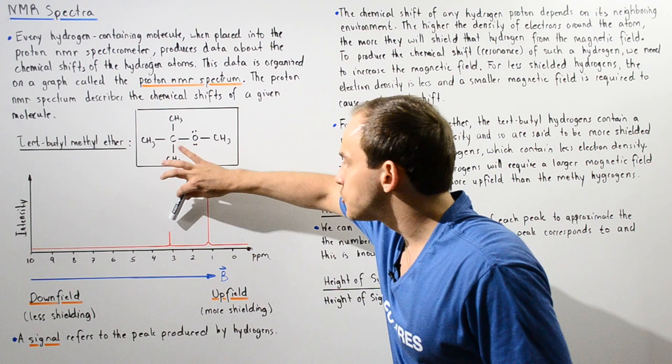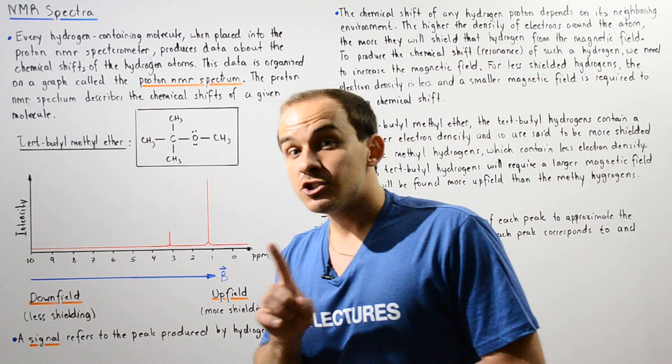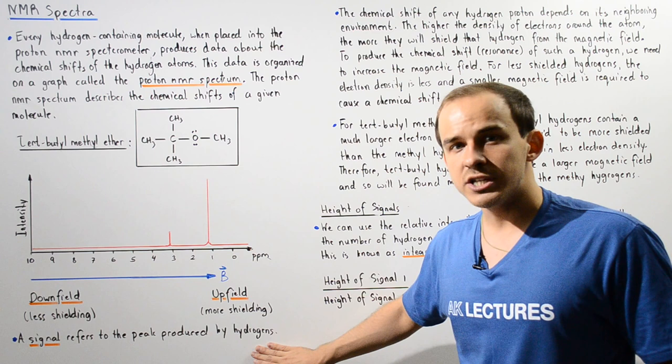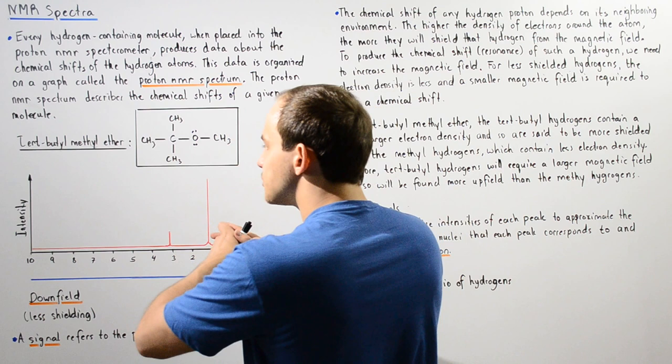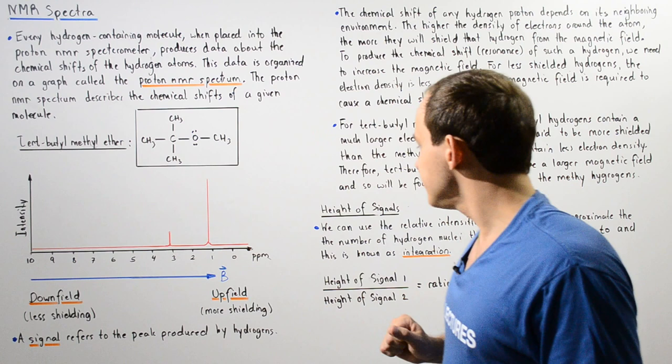Each one of these peaks is known as a signal. A signal refers to the peak produced by our protons inside those hydrogen atoms. The y-axis designates the intensity of those signals — the height of those signals. The greater the height is, the more intense our signal is. We'll see what the intensity tells us in just a moment.